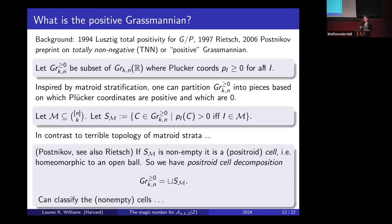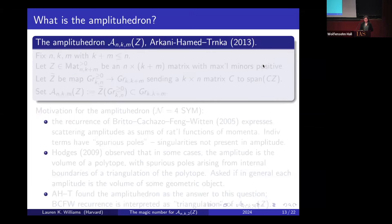There is a beautiful classification of these positroid cells given by equivalence classes of plabic graphs or on-shell diagrams. Then, roughly 10 years after the introduction of the positive Grassmannian, Arkani-Hamed and Trnka introduced the amplituhedron.